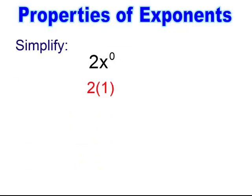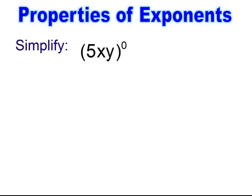That x to the 0 power equals 1. We have multiplication here — it's 2 times 1, so my solution when I simplify would be 2. The whole entire quantity raised to the 0 power equals 1.